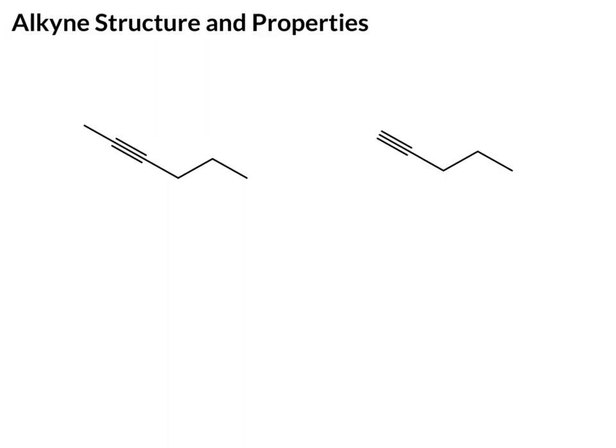We're now going to begin our chapter on alkynes. And as you know, the alkyne functional group is when you have a carbon-carbon triple bond in a molecule.